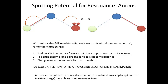Here's an example of a three-atom resonance unit. I have an anion — a negative charge — and a pi bond. The donor is the negative charge, the acceptor is the pi bond, and all three atoms are adjacent. If the atoms are not adjacent, resonance is not possible. For anions, to draw one resonance form you have to push two pairs of electrons — the lone pair as well as the pi bond. Pi bonds become lone pairs and lone pairs become pi bonds, and the charges must match.